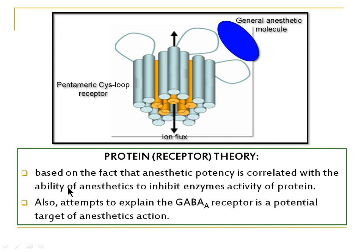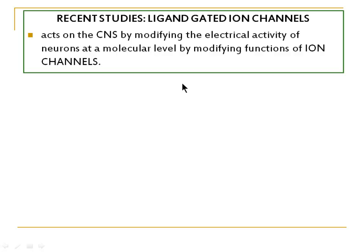The next theory is the Protein theory, or Receptor theory. It is based on the fact that anaesthetic potency is correlated with the ability of anaesthetics to inhibit enzyme activity of pure proteins. It also attempts to explain that the GABA-A receptor is a potential target for anaesthetic action, with the anaesthetic molecule binding to the receptor and altering ion influx through it.